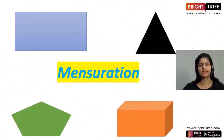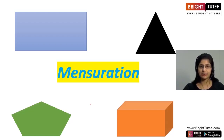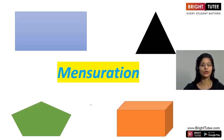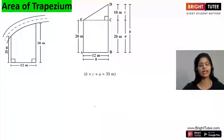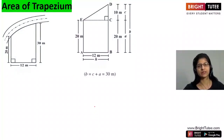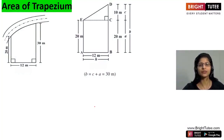Hello students, let us continue the chapter Mensuration. In the previous lecture we discussed how to find areas and perimeters of plane figures. Now we are going to discuss about the area of trapezium. If a trapezium is given to us, how do we find the area? We are going to deduce a formula for the area of a trapezium.